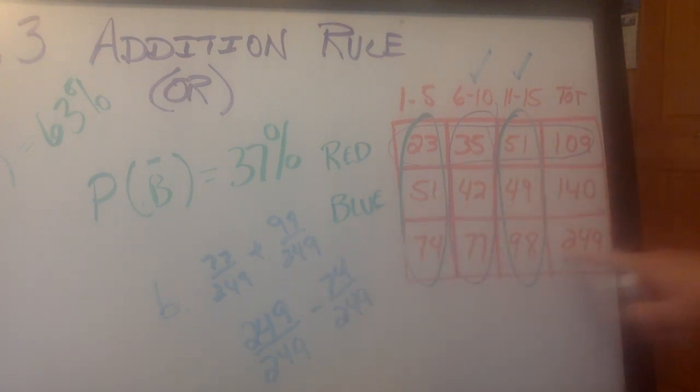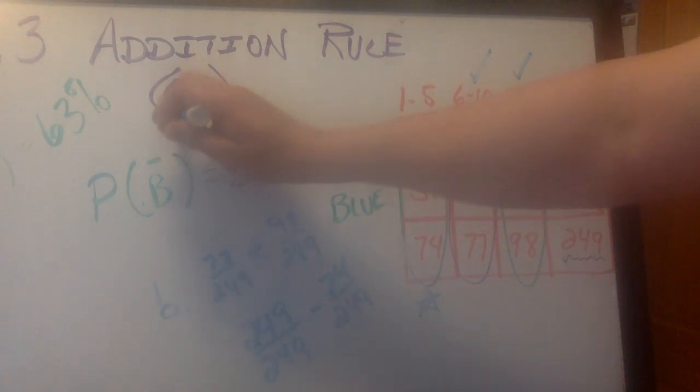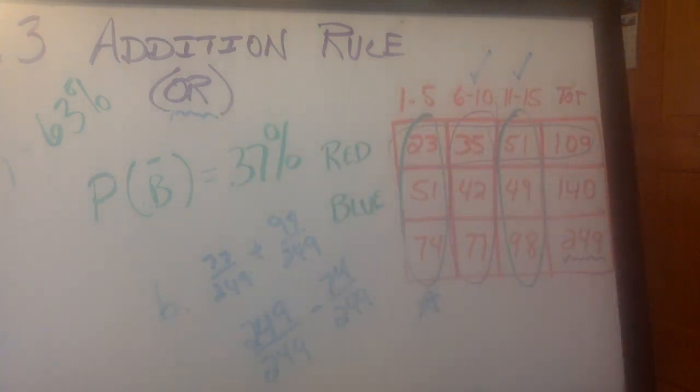It might be easier to just do this math than to add a hundred of these together. Because all of these add up to 249. And I do not want this one. So why not just take that minus that? And that gives me the rest. That's the idea of using a complement in this section of the chapter.